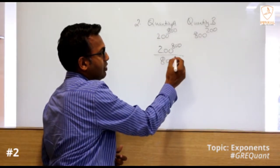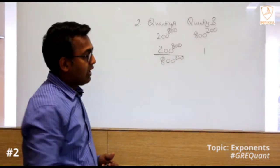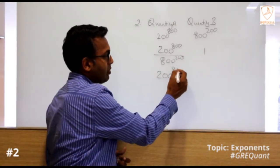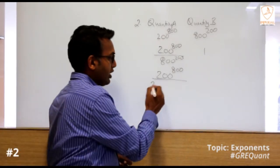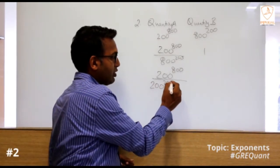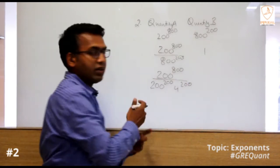Simplify this - you can write this as 200 power 800, and 800 we can write as 200 into 4, so I'll write it as 200 power 200 into 4 power 200, breaking it up. The rule of exponents we'll use - when you divide, the exponents get subtracted.